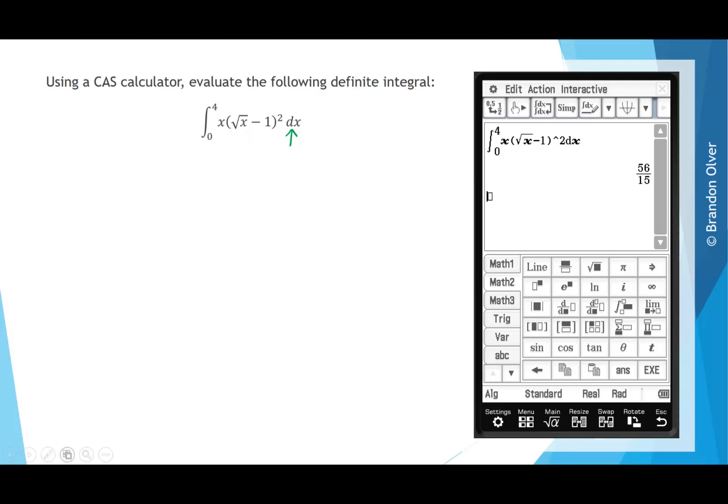Next, all we need to do is hit Execute, and that will give us the value of this definite integral. So, from the CAS calculator, we found that that was equal to 56 divided by 15. So, that is the value of this definite integral.